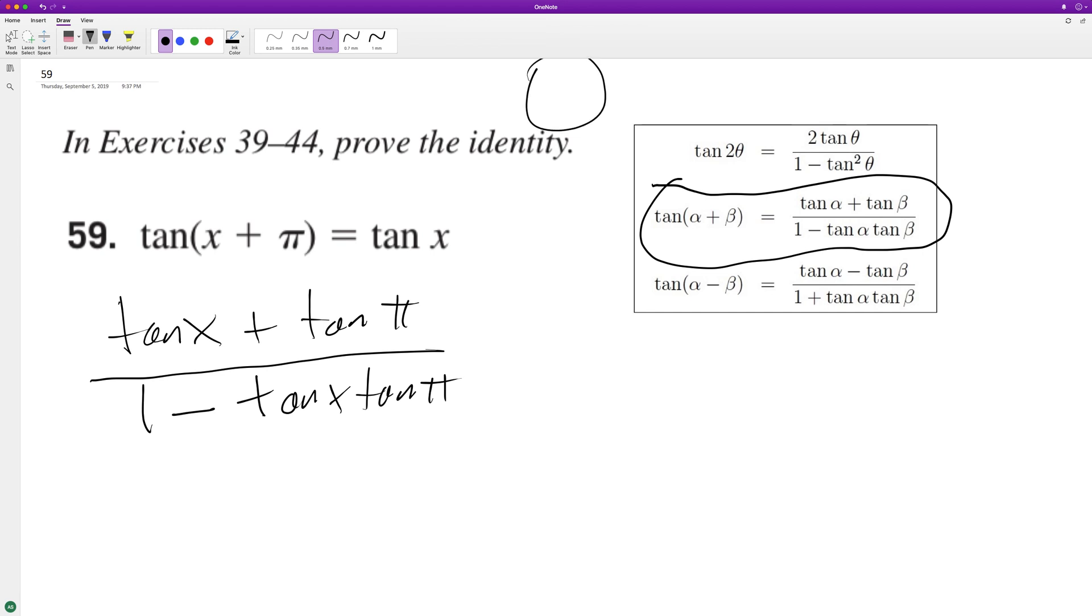So pi on the unit circle is over here, which is negative one comma zero, and tangents y over x, so in that case, it's going to be zero over negative one.